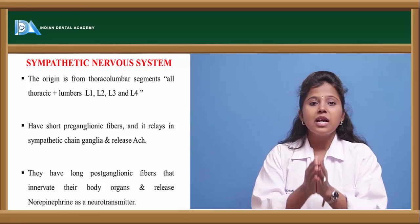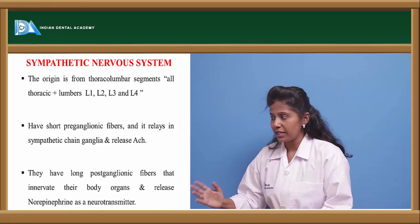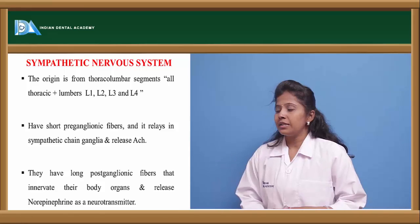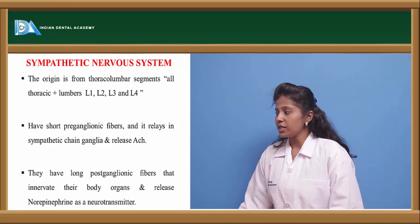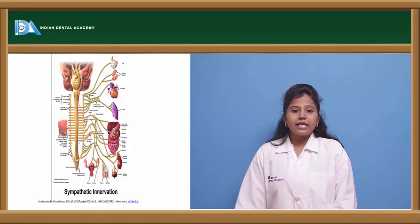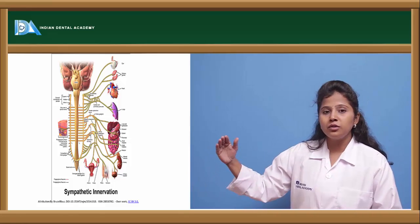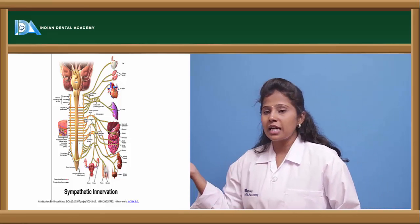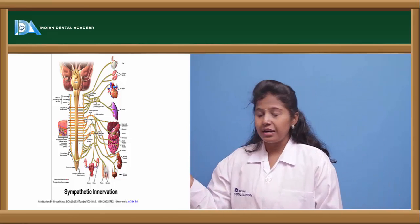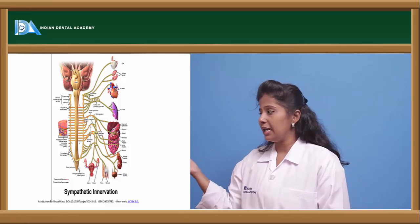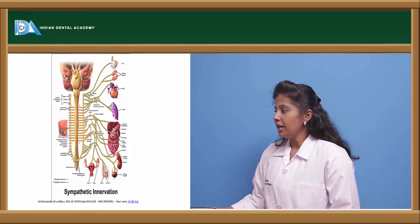Activation of the pre-ganglionic fibers leads to the release of the neurotransmitter acetylcholine, while the post-ganglionic fibers lead to the release of a neurotransmitter called norepinephrine. The sympathetic innervation to the eye causes dilation of the pupil, inhibition of saliva secretion, increased heart rate, bronchial dilation, and relaxation of the urinary bladder.